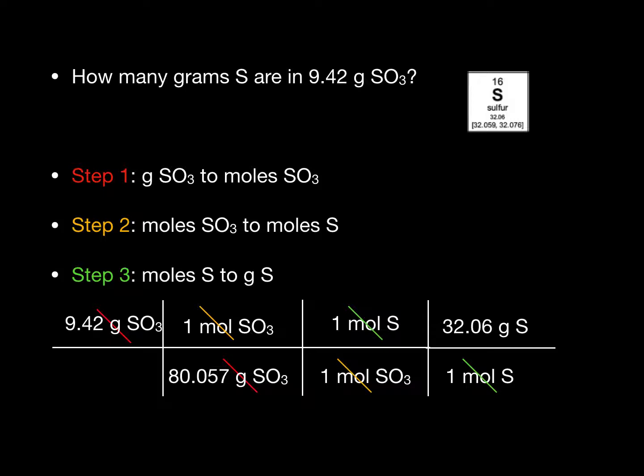After we punch this into a calculator and round off to three sig figs, we get 3.77 grams of sulfur. Make sure to like this video if it helped you and subscribe for more useful chemistry tutorials. Thank you for watching.